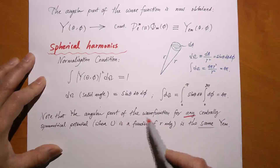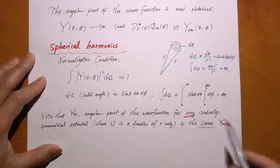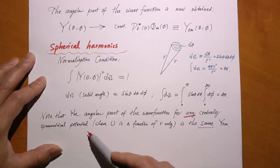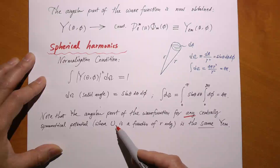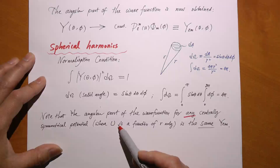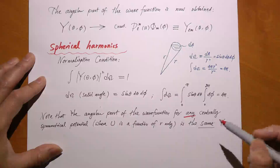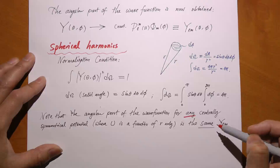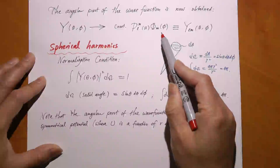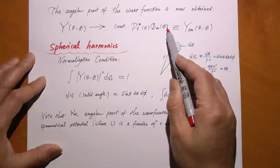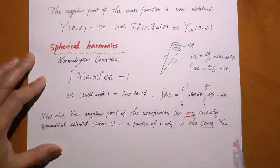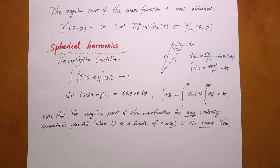The angular part of the wave function — the spherical harmonics — is the same for any centrally symmetrical potential. Centrally symmetrical means the potential does not depend on the angles theta and phi; it's isotropic, depending only on the distance r. We have not yet discussed the physical meanings of these two quantum numbers l and m. We just say you must have two quantum numbers to satisfy the boundary conditions — either periodicity or the special angles. But we will discuss the physical meaning of l and m later.